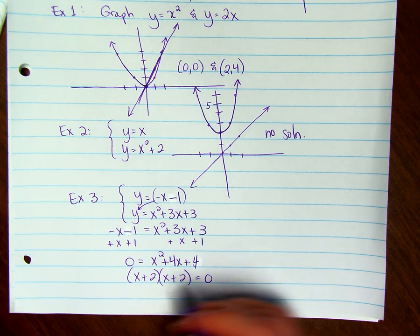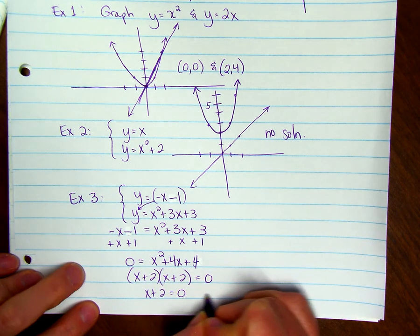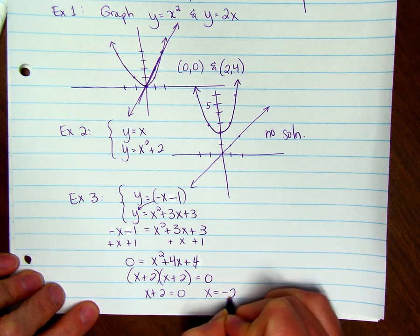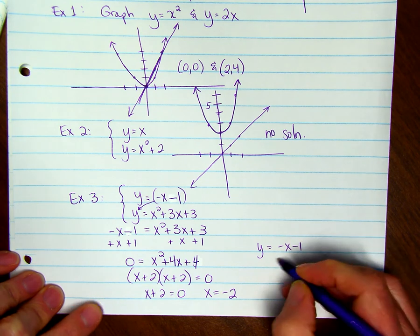So we can say that x + 2 = 0. You subtract 2, so x = -2. Then I plug that in to y = -x - 1.